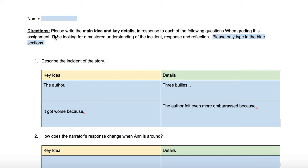The instructions are to write the main idea and key details in response to each of the following questions. When grading this assignment, I'll be looking for mastered understanding of the incident, the response, and the reflection — whether you can identify the ideas that will answer the question. I'm not looking for grammar, spelling, or a perfect sentence. I'm just looking for whether you can identify the ideas.